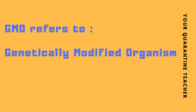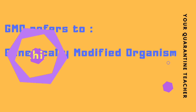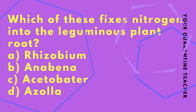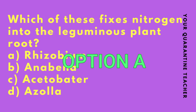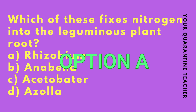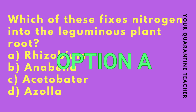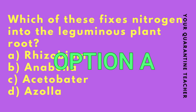What is GMO? GMO is a very specific question — it stands for Genetically Modified Organism. Then, which of these fixes nitrogen into the leguminous plant root? The answer is Option A Rhizobium.